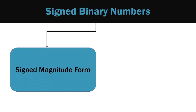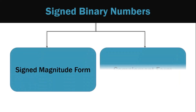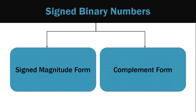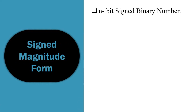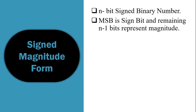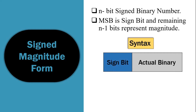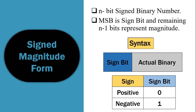Signed binary numbers are represented in two forms: signed magnitude form and complement form. First we will learn about signed magnitude form. Suppose we have an n-bit signed binary number. Here the MSB is the sign bit and the remaining n-1 bits represent the magnitude. The syntax is: sign bit followed by the actual binary number. If the sign is positive then the sign bit is 0, and if the sign is negative then the sign bit will be 1.